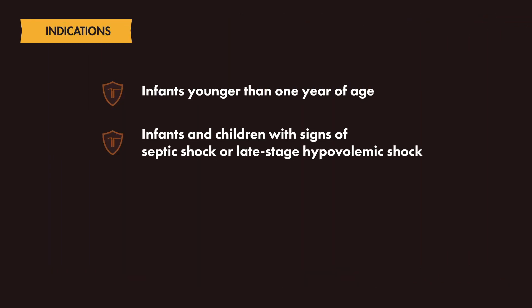Scenario 2 is the use of atropine in infants and children with signs of septic shock or late-stage hypovolemic shock. In these cases, atropine may be beneficial because it may prevent unstable bradycardia by counteracting reflex bradycardia that can occur in a small subset of patients post-intubation.